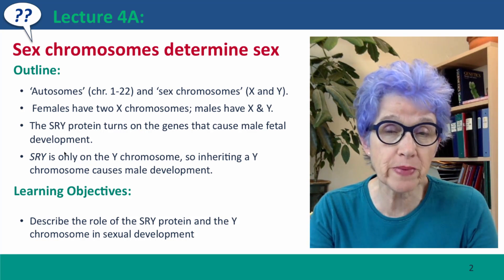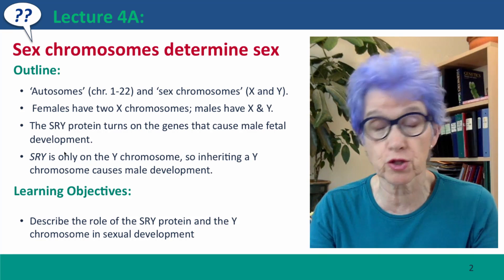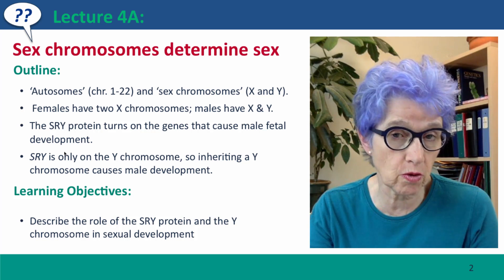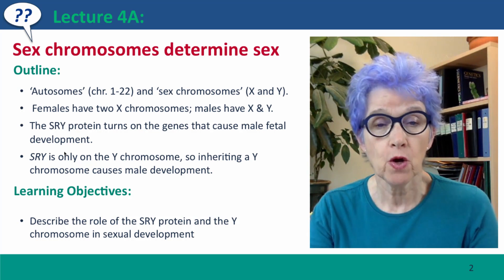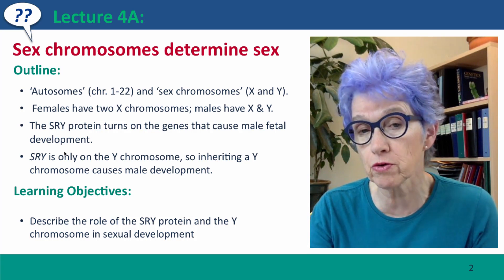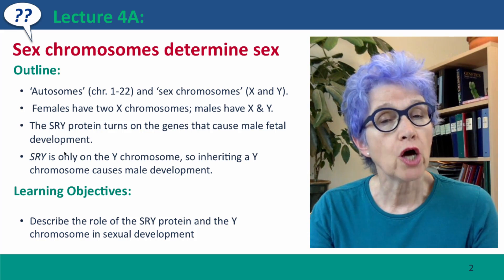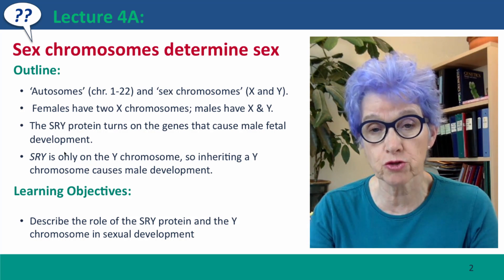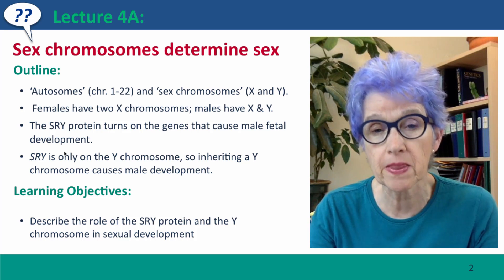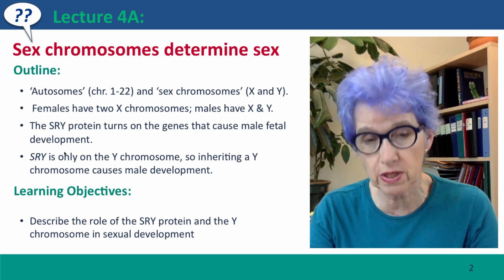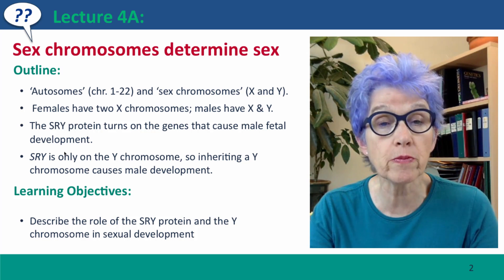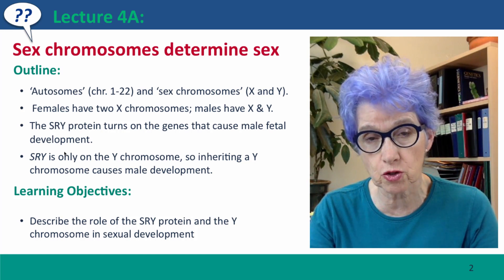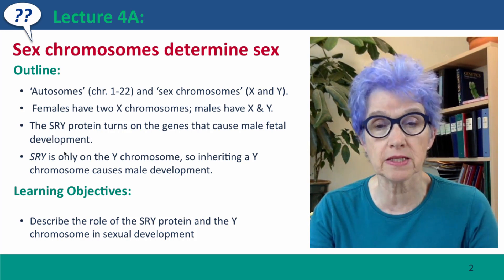We'll first make the distinction between the autosomes — the chromosomes that are the same in males and females — and the so-called sex chromosomes, X and Y. We'll talk about a particular protein, the SRY protein, which turns on the genes responsible for causing male tissues to develop in the fetus. Because this protein's gene, also called SRY, is only present on the Y chromosome, if you inherit a Y chromosome, you will develop as a male.